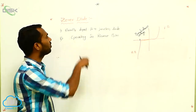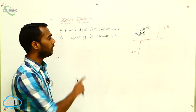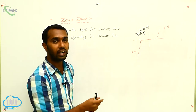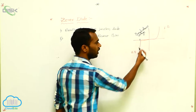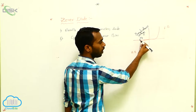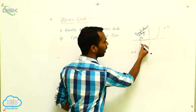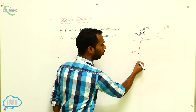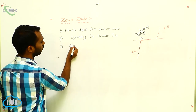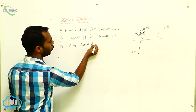Now, if you take this Zener diode, it is a heavily doped one operating in reverse bias. Because if we operate in reverse bias, it has a sharp breakdown voltage. At this particular Zener voltage, we get current. So it has a sharp breakdown voltage.